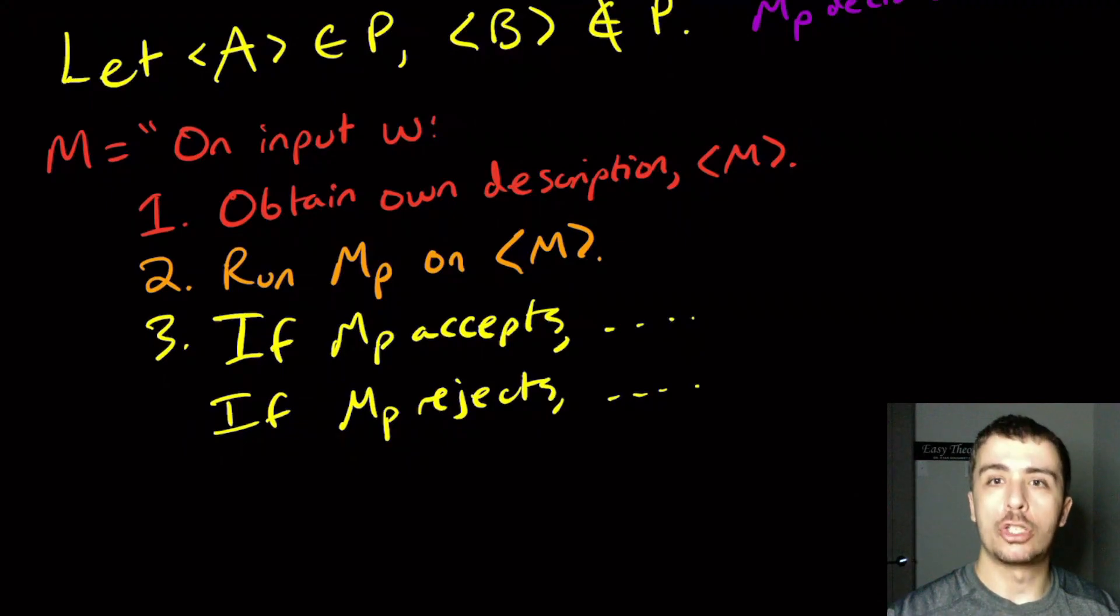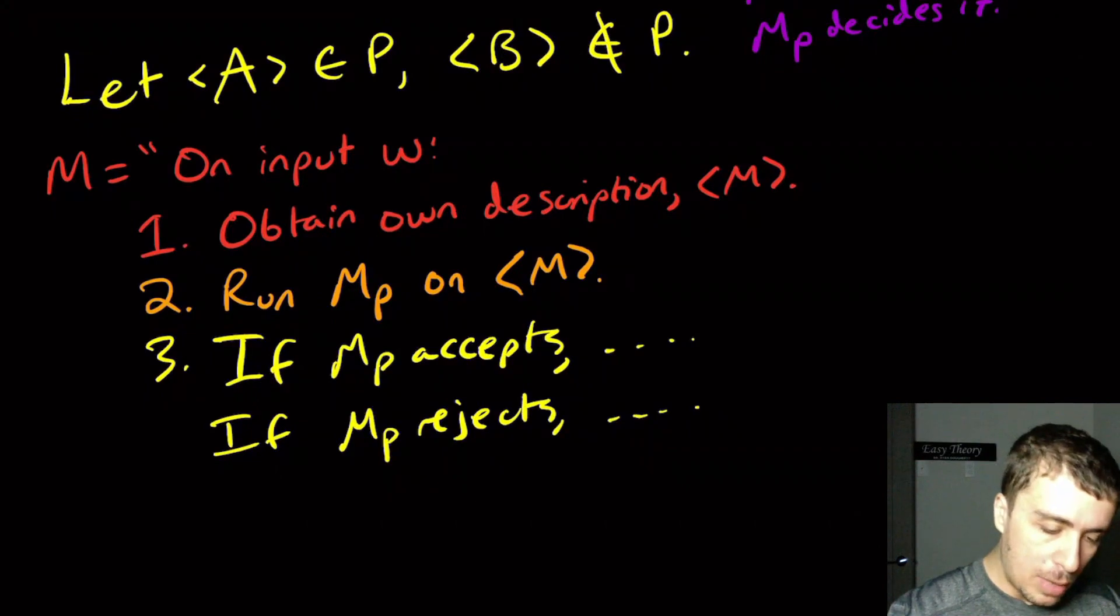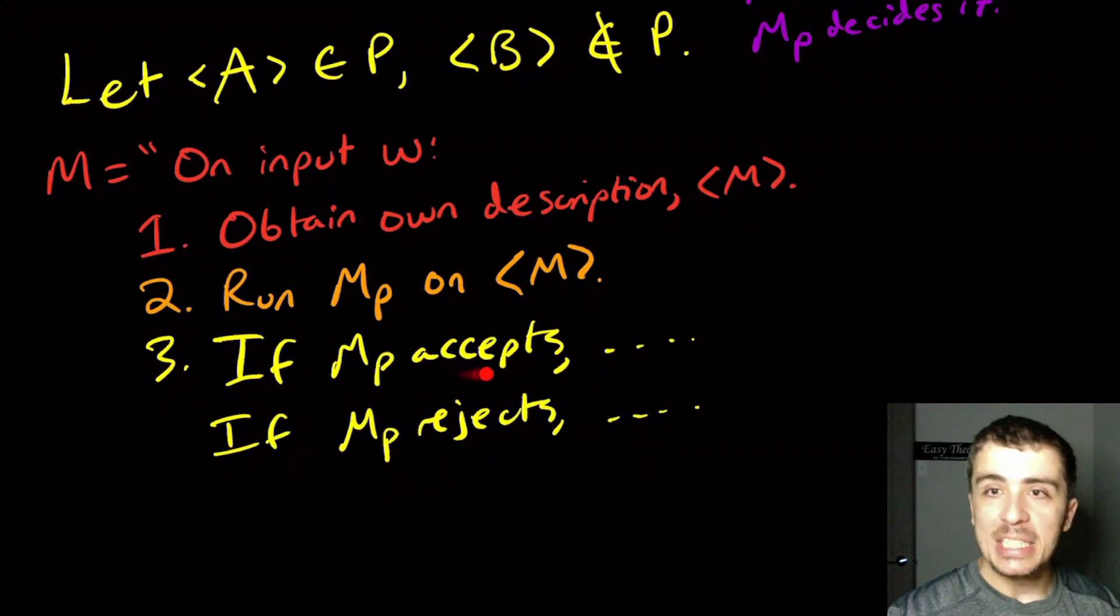If MP accepts, then what we want to do is have a logical contradiction. We want M to disagree with itself. If MP accepts, that means this machine M has this property P.